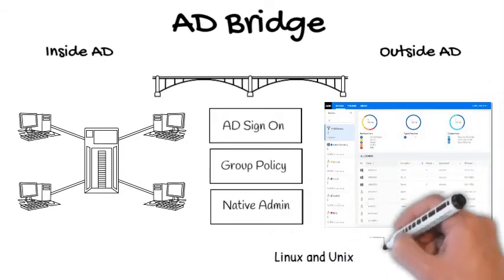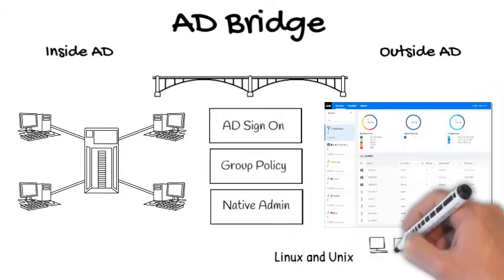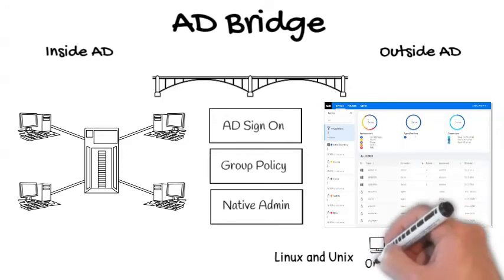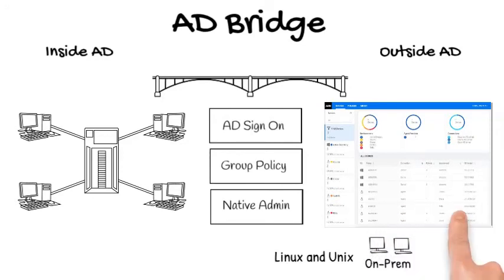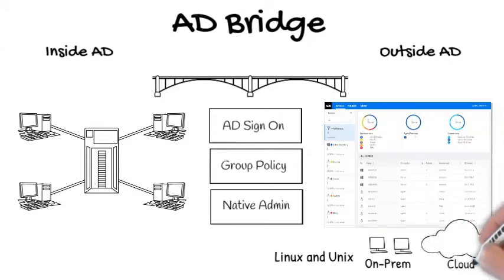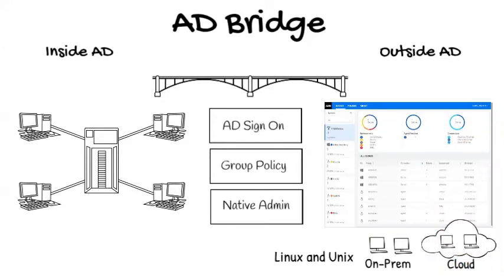The current version allows you to manage Linux and Unix devices both on-premise, as well as Linux and Unix virtual machines running in the cloud. This gives you a single pane of glass for all of your security and configuration for the enterprise. With Micro Focus AD Bridge, you can expand your sphere of control and extend the security perimeter of your enterprise.